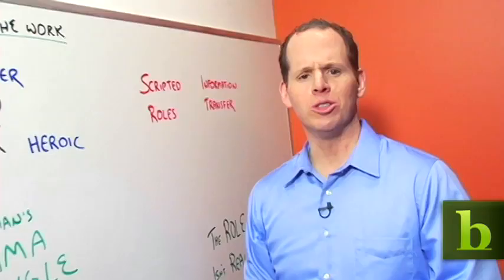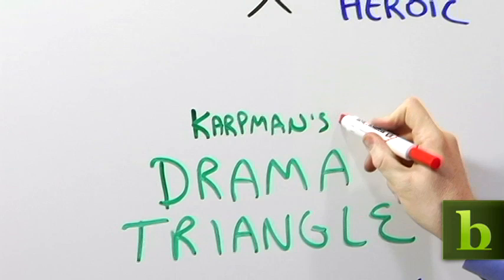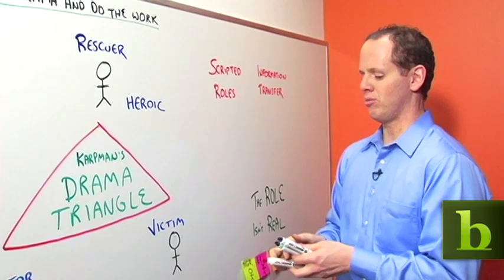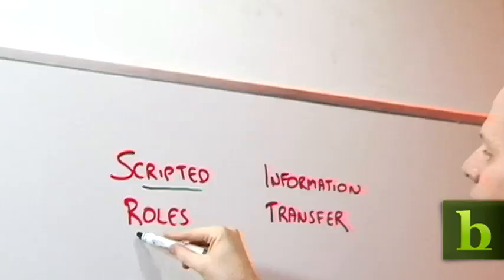In the late 1960s, a psychologist named Stephen Cartman defined what he called the drama triangle. The drama triangle is a set of three interrelated, scripted roles that tell us how to behave to create drama.